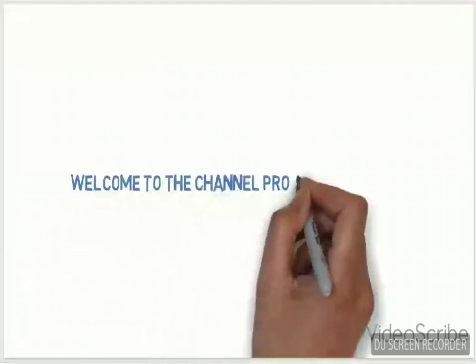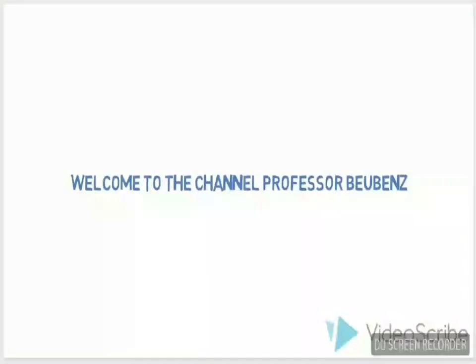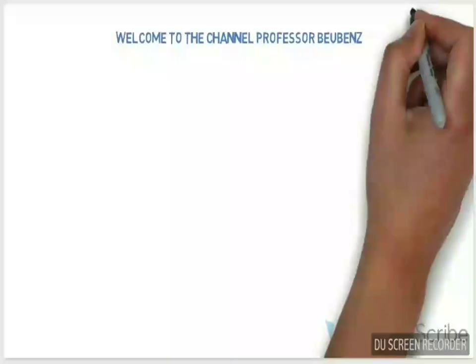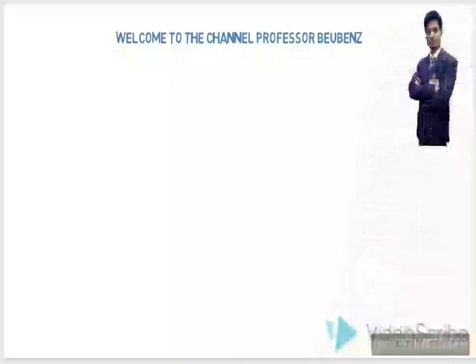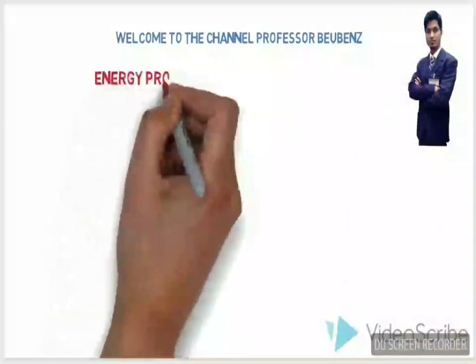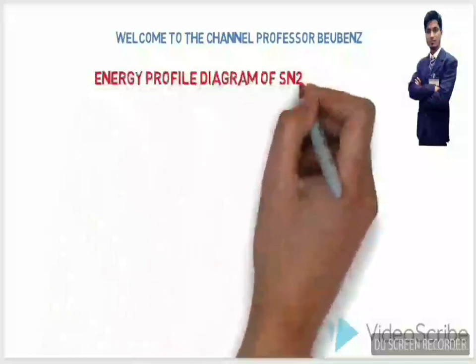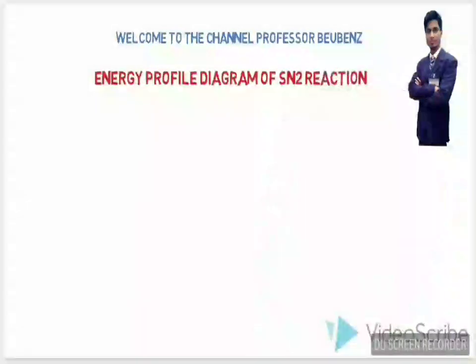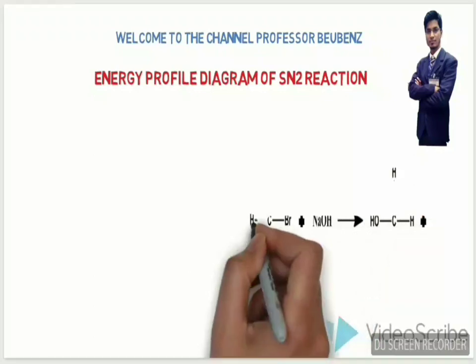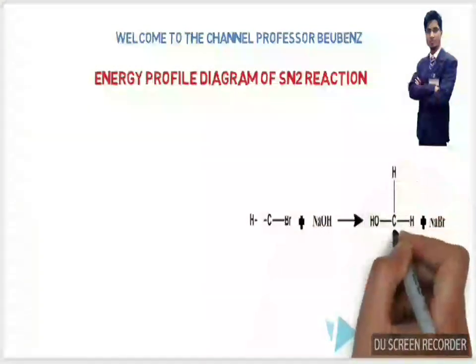Hello guys, welcome to the channel Professor Buben's. Today we'll see the energy profile diagram of SN2 reaction. As in previous video, we have already seen that when methyl bromide is treated with sodium hydroxide, it forms methyl alcohol and sodium bromide as a byproduct.